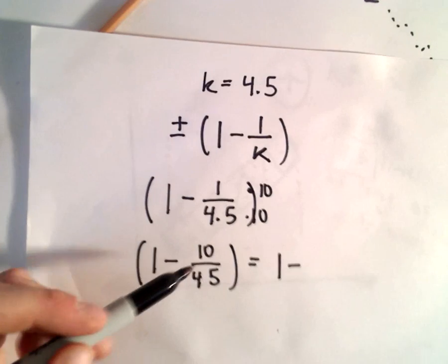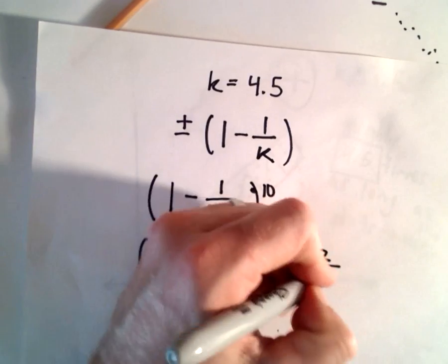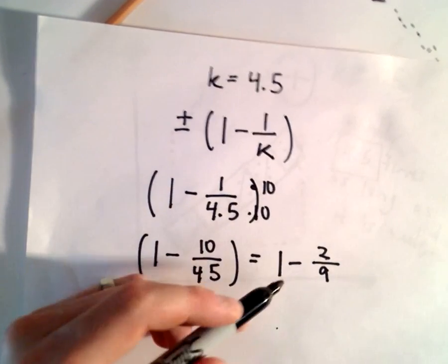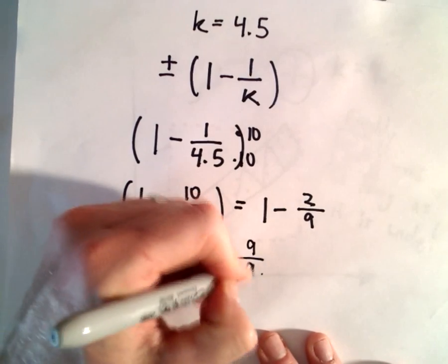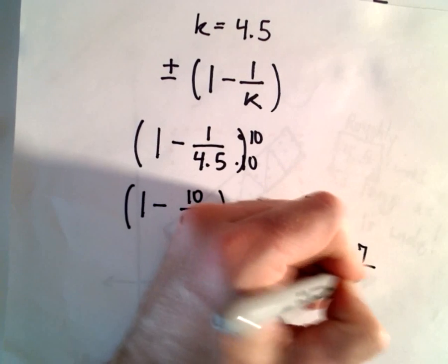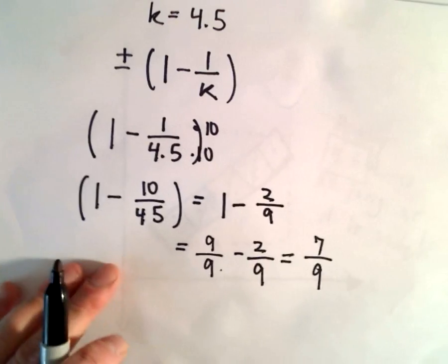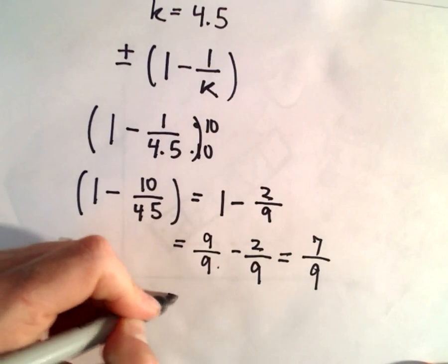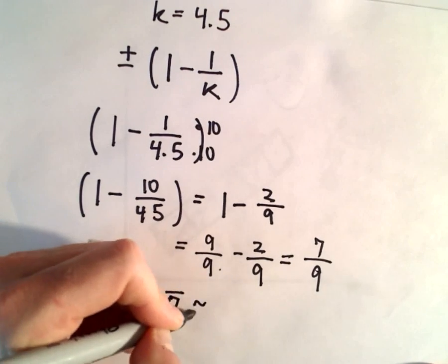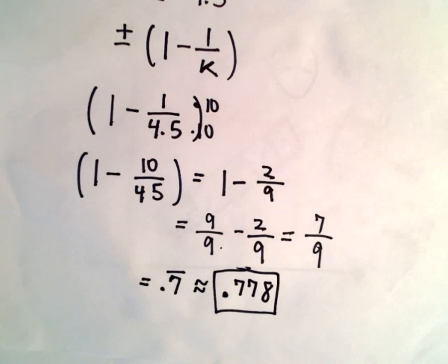We can reduce that. Five goes into both - 5 goes into 10 twice, and 5 goes into 45 nine times. We can make 1 into a fraction: that's 9 over 9 minus 2 over 9. That leaves us with 7 over 9. One ninth is 0.1111 repeating, so 7 ninths would be 0.7 repeating, or we can round this to 0.778. That would be a rough estimate for our correlation coefficient.